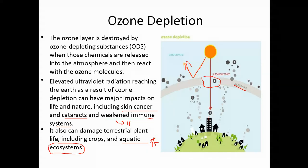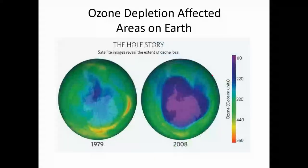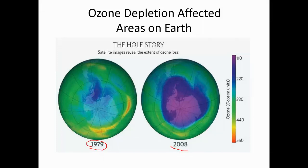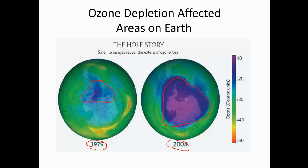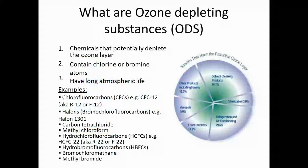We now need to find out which substances cause ozone layer depletion. Looking at images from 1979 and 2008, you can see a slight depletion in the earlier image and a very large hole by 2008, which is very dangerous. Chemicals which contain chlorine and bromine atoms are known as ozone depleting substances.